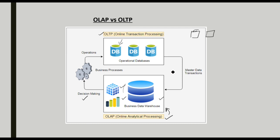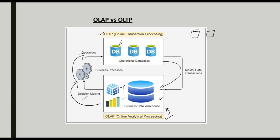Our first step is to store all the databases and detailed information, making a data warehouse. Then we analyze and make decisions for the business. This is the working of OLAP and OLTP — they are like a circle. In transaction processing, lots of databases are there; all that historical data we store together to make a data warehouse, then we analyze and give valuable information to our client for decision making.